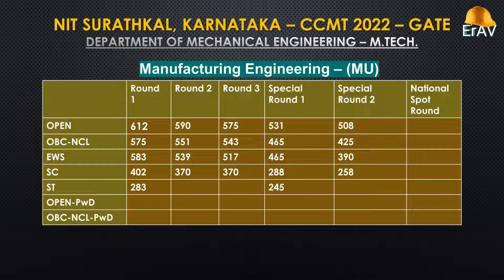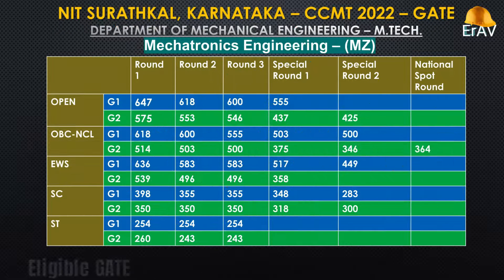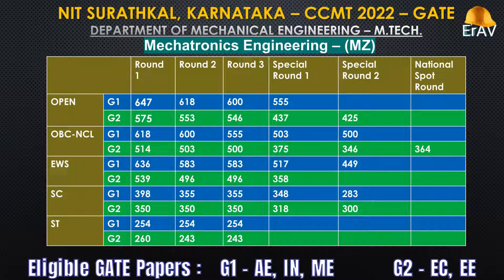Manufacturing Engineering. Mechatronics Engineering eligible GATE papers: Group 1 — Aerospace Engineering (AE), Instrumentation Engineering (IN), ME, PI. Group 2 — EC, EE.